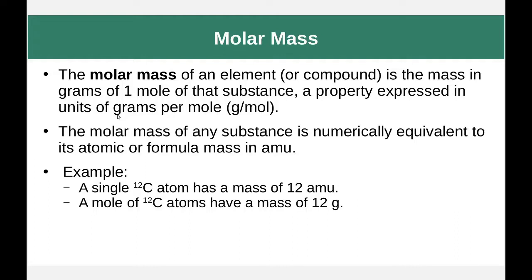The molar mass of an element is the mass in grams of one mole of that substance, expressed in units of grams per mole. This value is numerically equivalent to the atomic or formula mass in AMU. So a single carbon-12 atom has a mass of 12 AMU, but a mole of those atoms has a mass of 12 grams. We can inter-convert between AMU and grams per mole — they are the same number; we just pick whatever unit is convenient for the calculation we're doing.